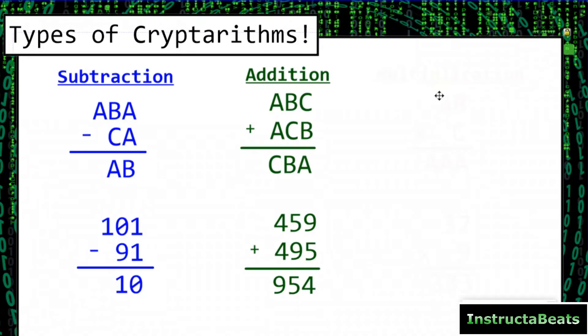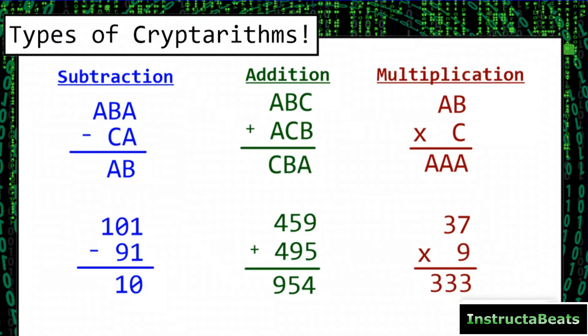And then there's also multiplication and division. Typically, you don't see this a lot with division. Typically, you kind of just see subtraction, addition, and then multiplication. So AB times C equals AAA. If you solved this one out, you would see that 37 times 9 equals 333. Again, for this one, A was 3, B was 7, and then C had to be 9. So all the A's down here were also a 3. So these are different types of cryptorhythms. You can actually get crazy with these. These are all base 10. We actually have a video on how to solve base 5 cryptorhythms. You can do this with any type of base number system that you want, and then any operation as well.